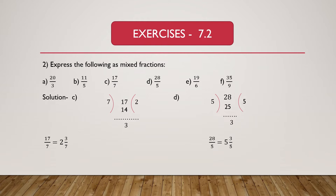Part D is given as 28 divided by 5. We have to express this fraction as a mixed fraction. Here 28 is the dividend and 5 is the divisor. We know 5 multiplied by 5 equals 25, and 28 minus 25 equals 3. We get 5 as the quotient and 3 as the remainder. So 28 divided by 5 equals 5 and 3/5.